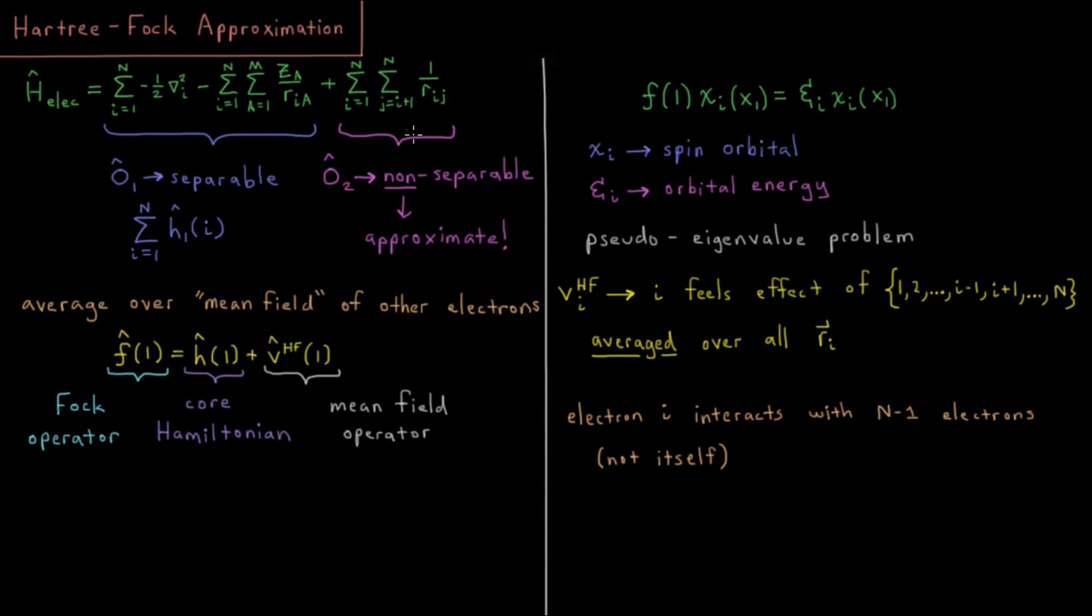That thus far is what we would call the one-electron operators, because each of these terms only depends on a maximum of one electron coordinates at a time. This is what you would call a separable operator, because we can factor it into the form sum i equals 1 to n of some one-electron operators, where the one-electron operator is the kinetic energy plus all of the nuclear attraction terms.